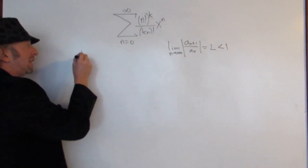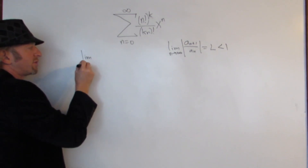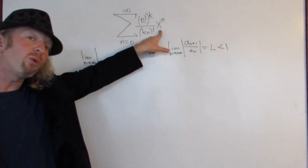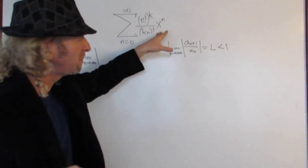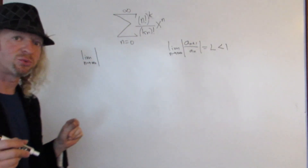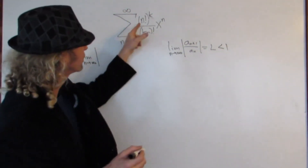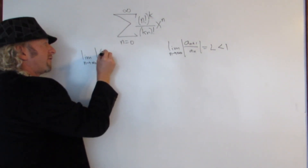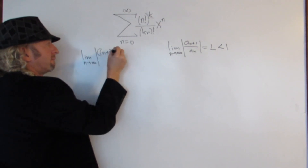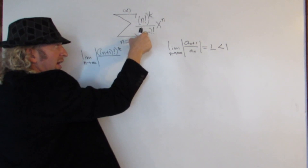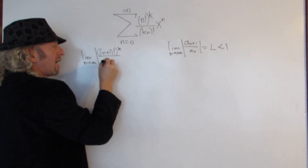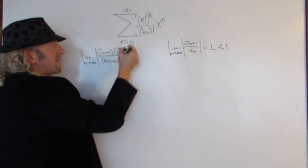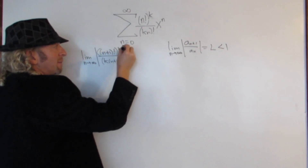Let's start by using the ratio test. We have the limit as n approaches infinity of the absolute value. It's important to keep the absolute values because we don't know what x is — x is a real number here so it could be negative. First we have to work out a sub n plus 1, which means we replace all of the n's with n plus 1's. So we'll have n plus 1 factorial to the k. Then here we have k times n plus 1 in parentheses factorial. And then x to the n plus 1.